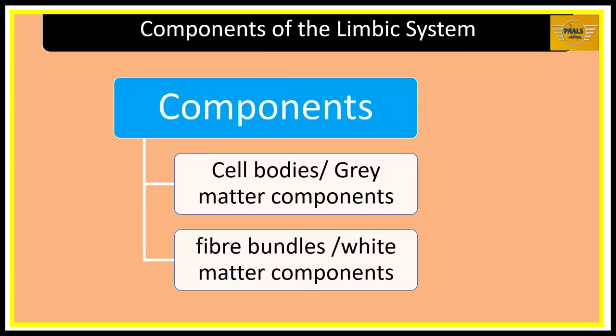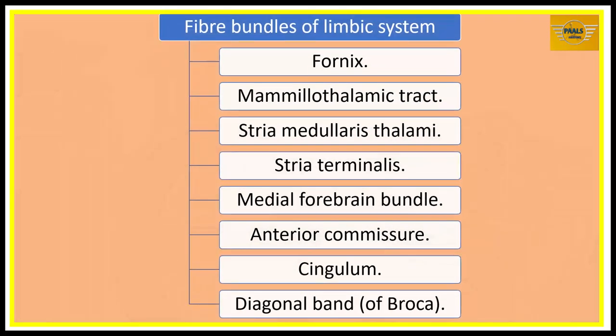The limbic system can be classified based on its components. We have two major components: the cell bodies, referred to as the gray matter components, and the fiber bundles or white matter components. Some examples of the fiber bundles of the limbic system are the fornix, the Mammillothalamic tract, Stria medullaris thalami, Stria terminalis, Medial forebrain bundle, Anterior commissure, Cingulum, and the Diagonal band of Broca.